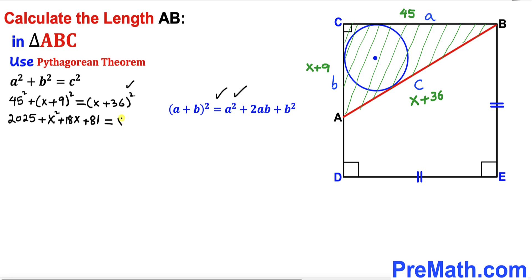Now we can see x² cancels out from both sides. Let's combine the like terms.